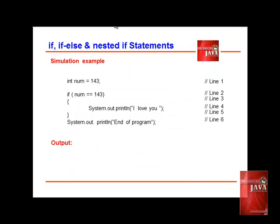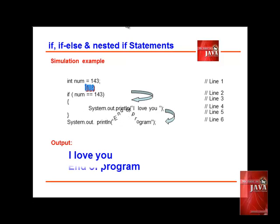Let us consider the following code. NUM has a value of 143. Next is an if statement. The program validates the condition. Since the relational operator tests the equality of NUM and the value 143, the condition is true, and the words 'I love you' are printed. The next statement will be executed on line 6, which displays 'end of the program.'